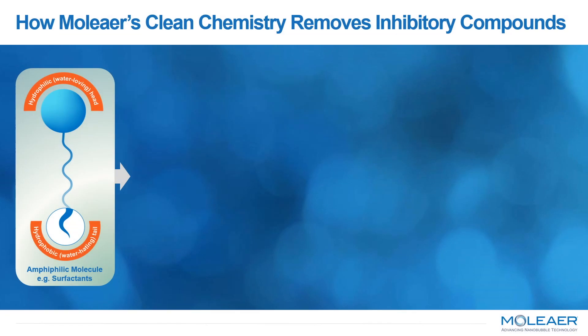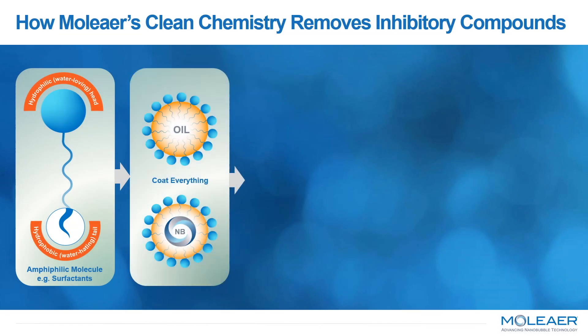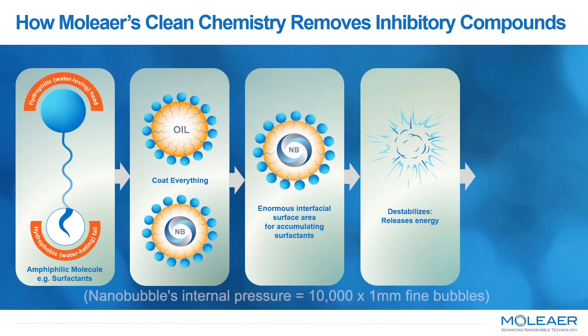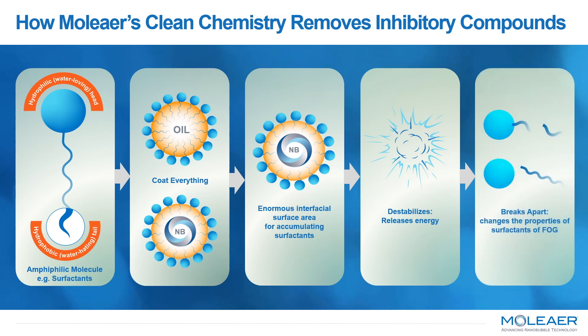Nanobubbles inactivate these contaminants because of their shape. An amphiphilic compound's hydrophilic head wants to be in the water, and its hydrophobic tail wants to be in another hydrophobic material — such as fats, oils, grease, or the nanobubble. Since these surfactants coat everything, they'll coat the surface of the nanobubble and accumulate. Because Molière's technology injects hundreds of millions to billions of nanobubbles per milliliter, there's an enormous interfacial surface area in contact with the water to accumulate the surfactants. When those bubbles destabilize, they release an extremely high internal pressure — enough to break the bonds of the molecules accumulated on the surface of the nanobubble, breaking apart these surfactants and changing their properties.